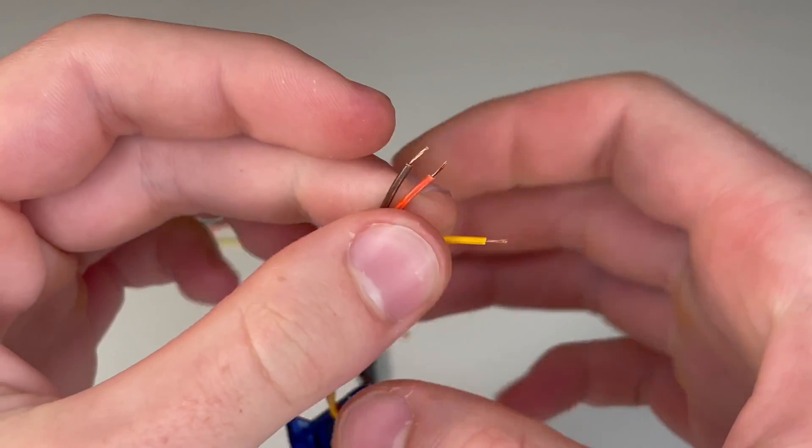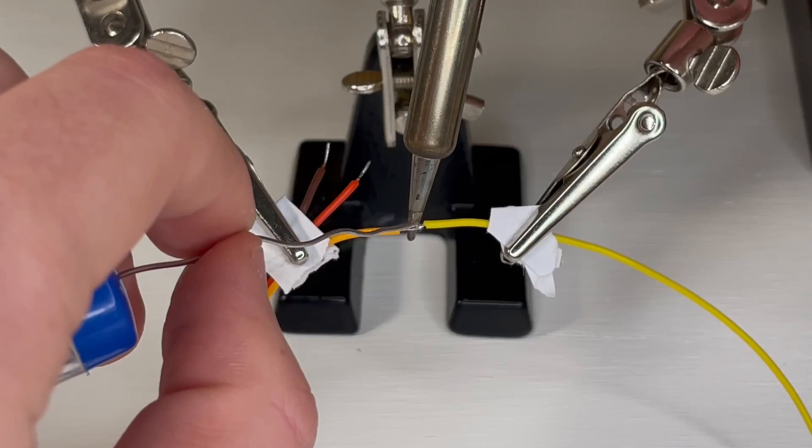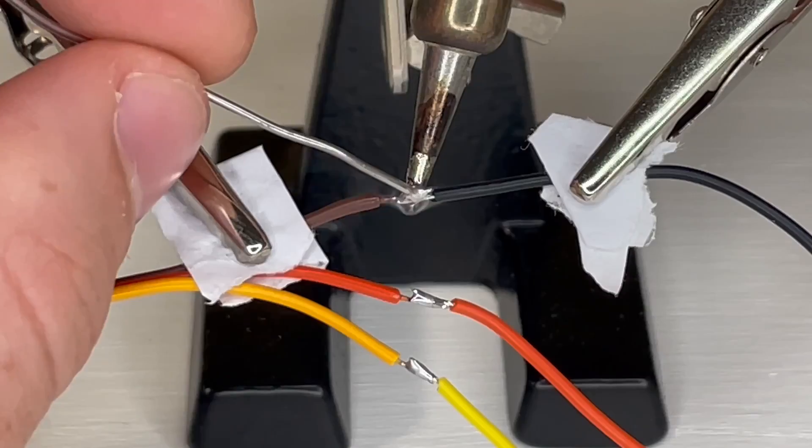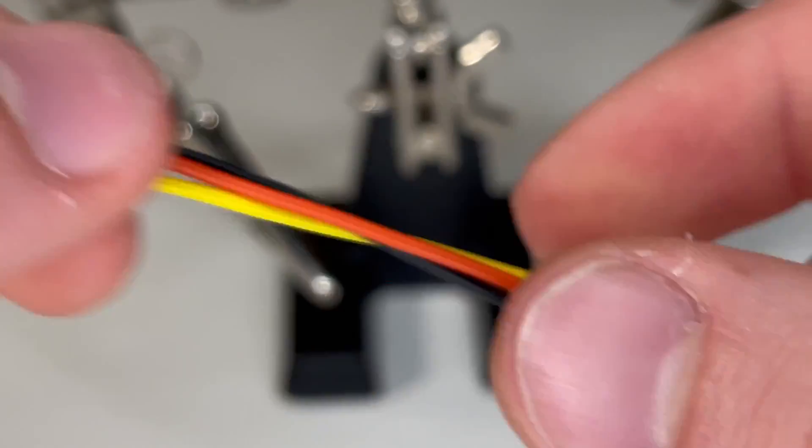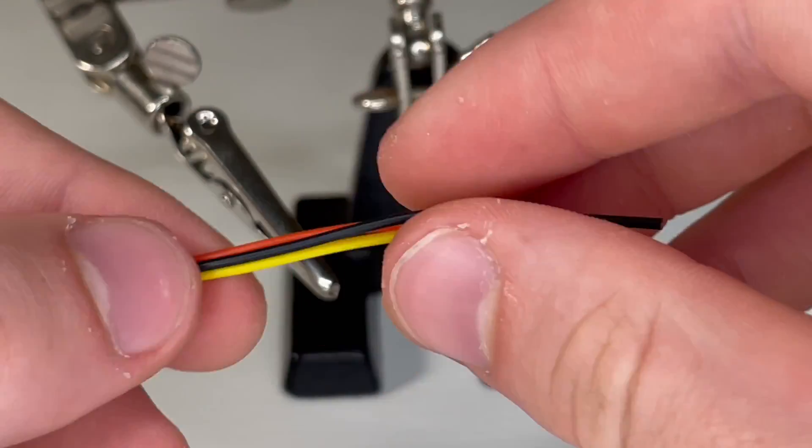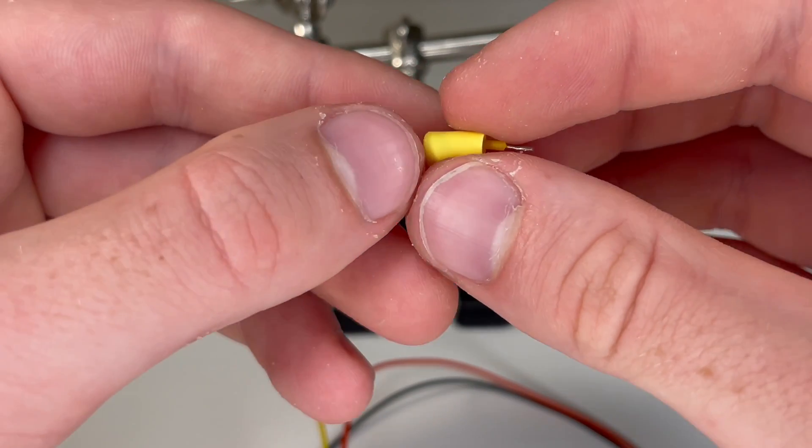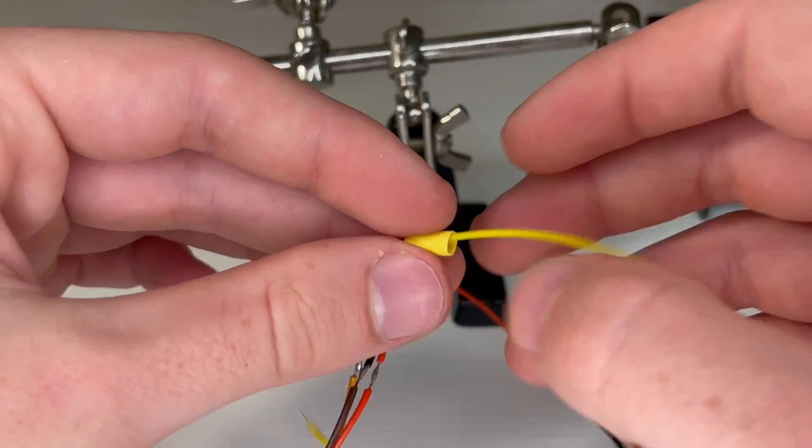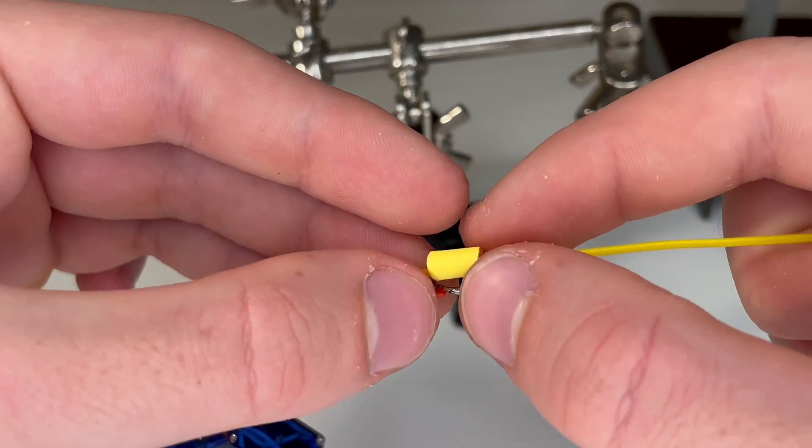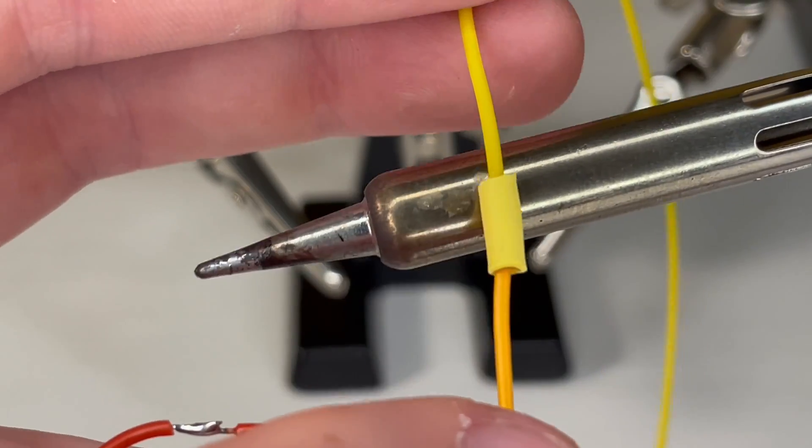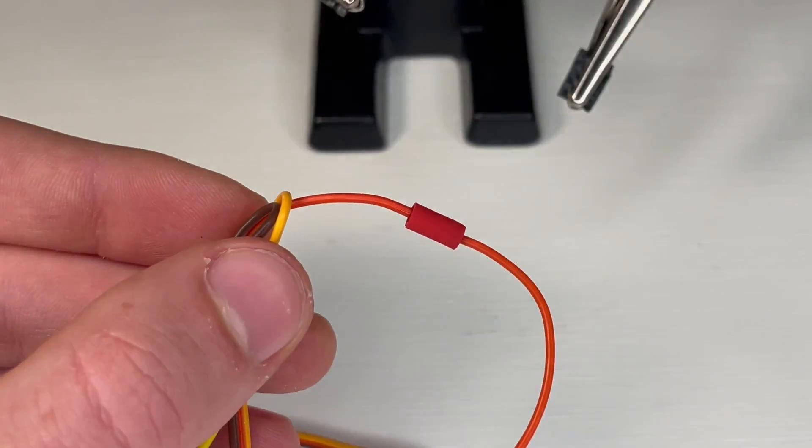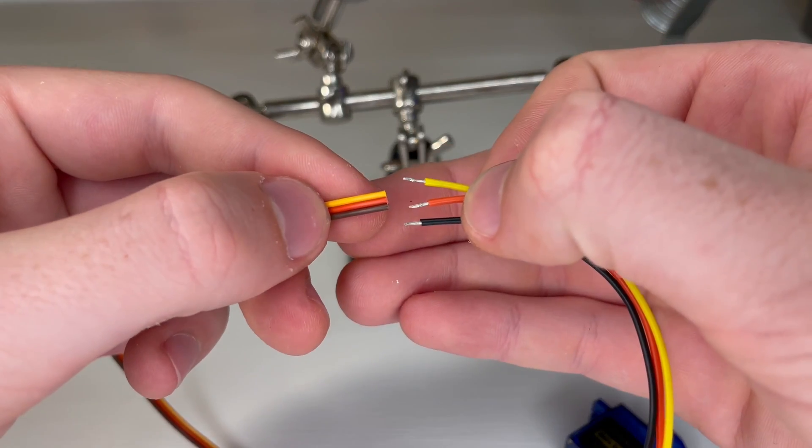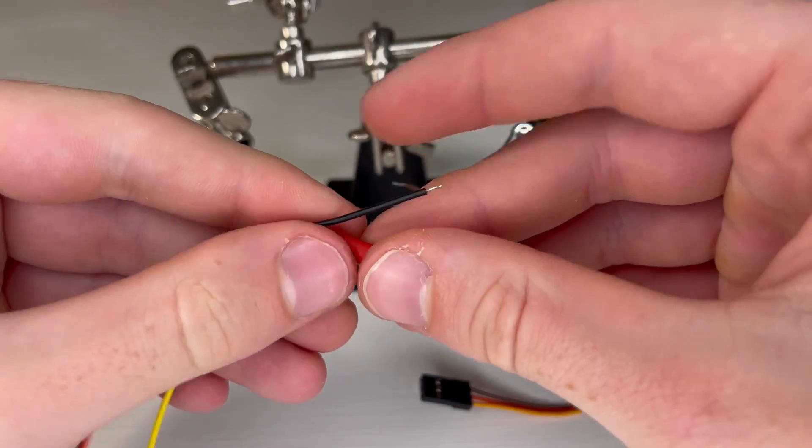Then you'll solder all three wires of the extension to the servo. And you can keep them insulated with shrink wrap. And you can either heat these up with the soldering iron or just wave a torch over them. Now we'll solder on the other side of the servo wire. And make sure to put the shrink wrap on before you solder.